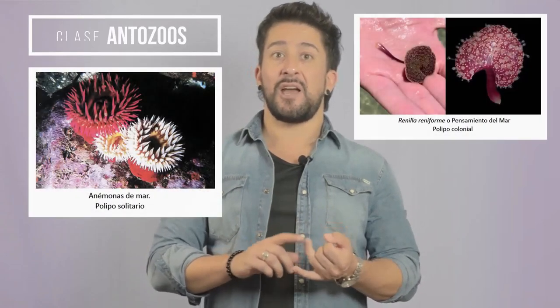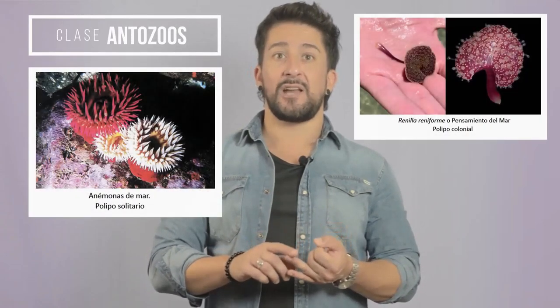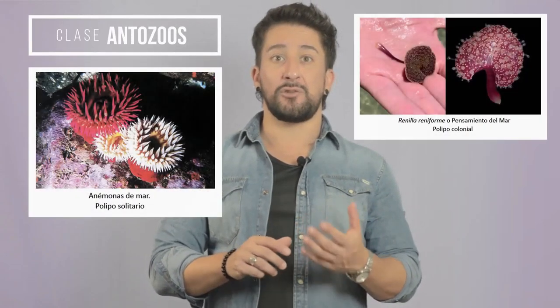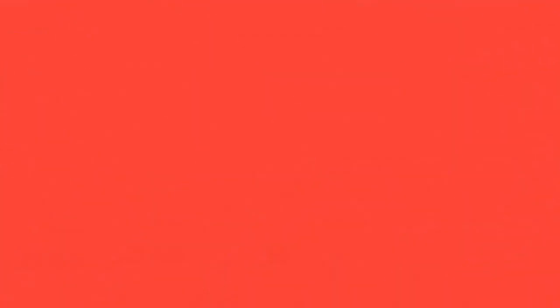Por último tenemos a los antozoos. En esta clase son todos pólipos marinos y no tienen forma medusa. Viven tanto en aguas profundas como en aguas superficiales, en mares polares y tropicales. Pueden tener esqueleto, como es el caso de los pensamientos de mar. En esta clase encontramos a las anémonas, a los corales, a los abanicos de mar, a los pensamientos de mar y a las plumas de mar.